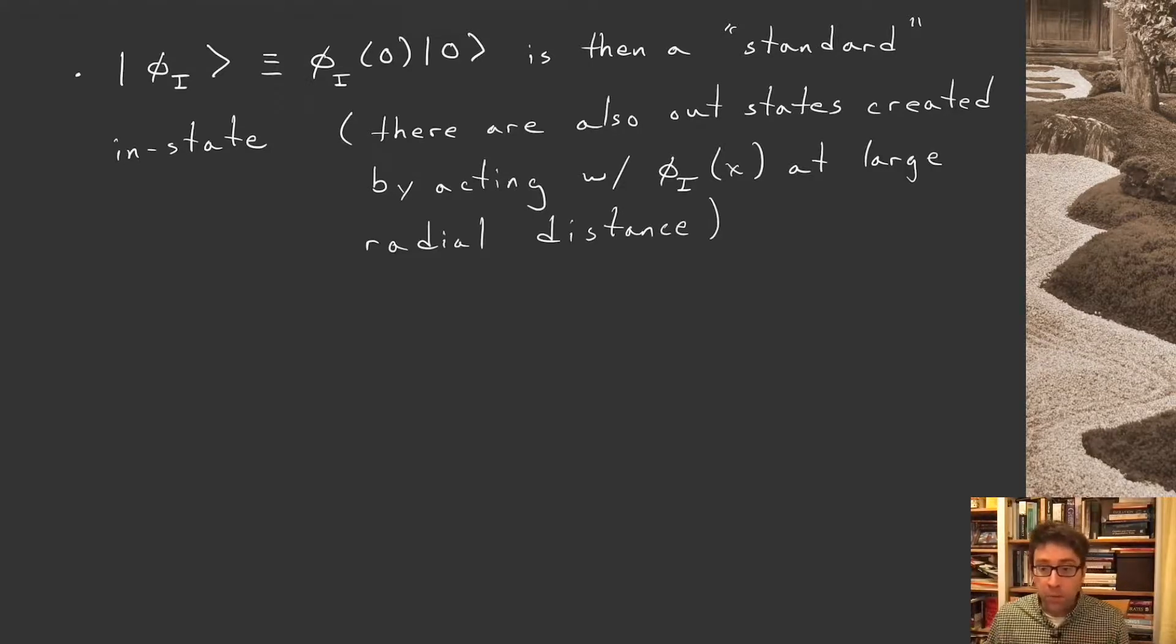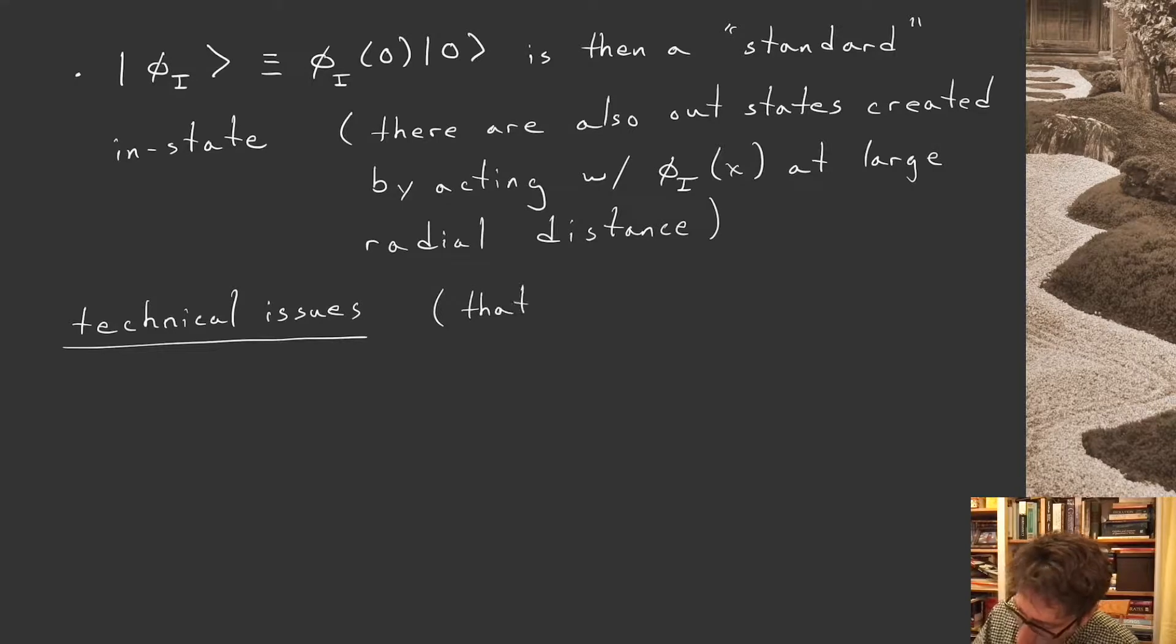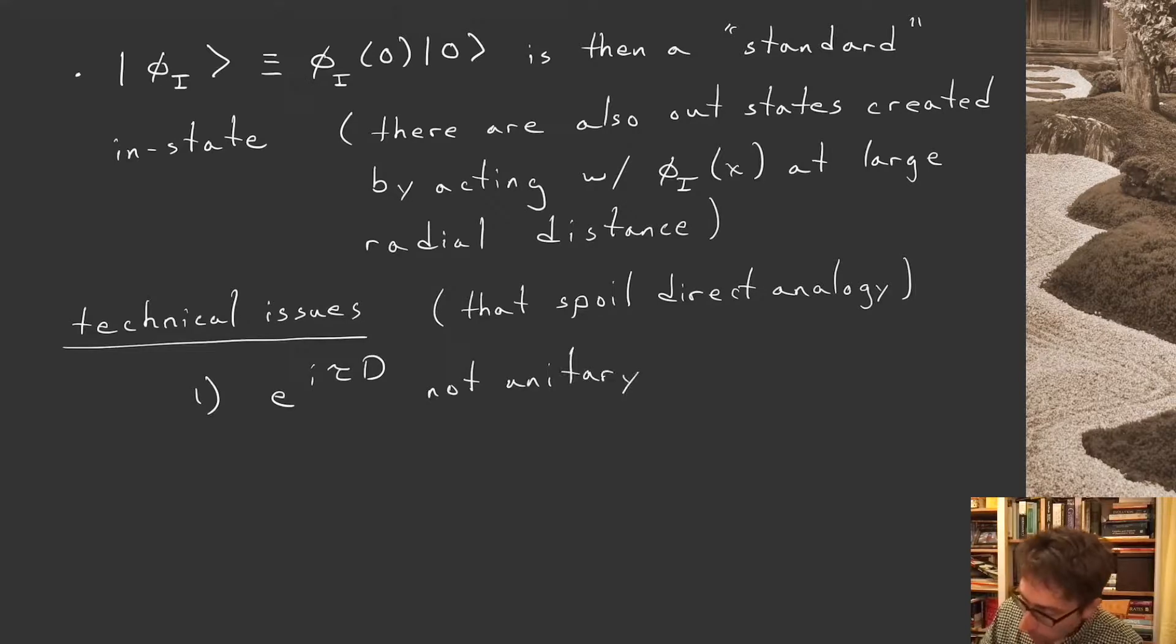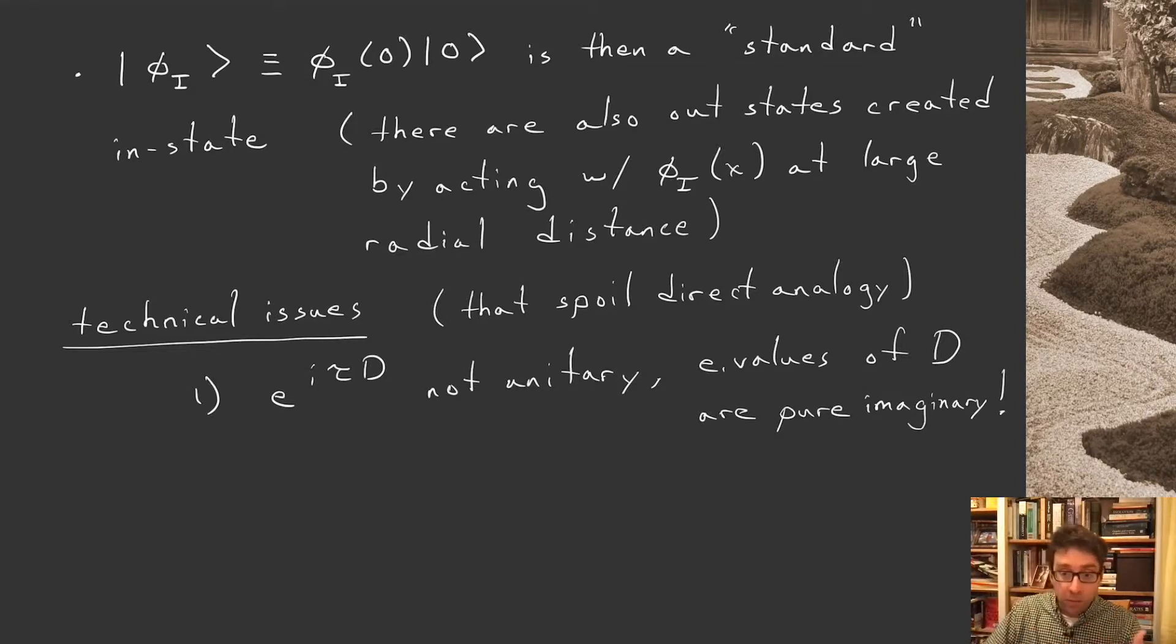Okay, this is a very short lecture. That's almost all I want to say. There are a couple of caveats I want to add now before we put this lecture to rest. A couple of technical issues. There are technical issues that spoil the direct analogy to a certain extent. Issue number one is that e^{iτD} is not unitary, at least not in a standard sense. Because remember, the eigenvalues of D are pure imaginary. So when I put in a pure imaginary eigenvalue into this exponential, I get something that is going to increase or decrease the norm of my state exponentially. That's not what we typically mean when we say unitary evolution. We mean some kind of evolution that preserves the norm.